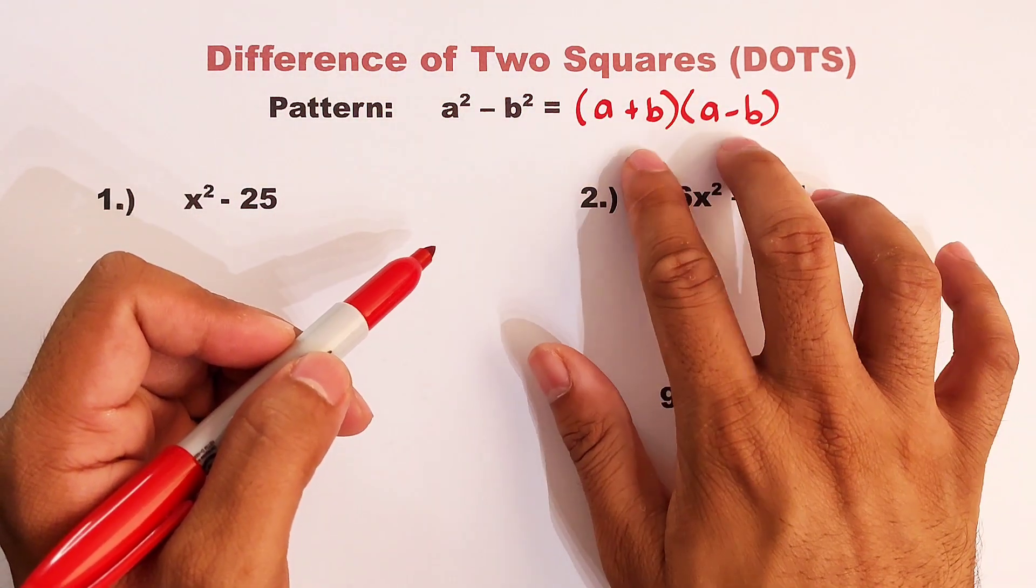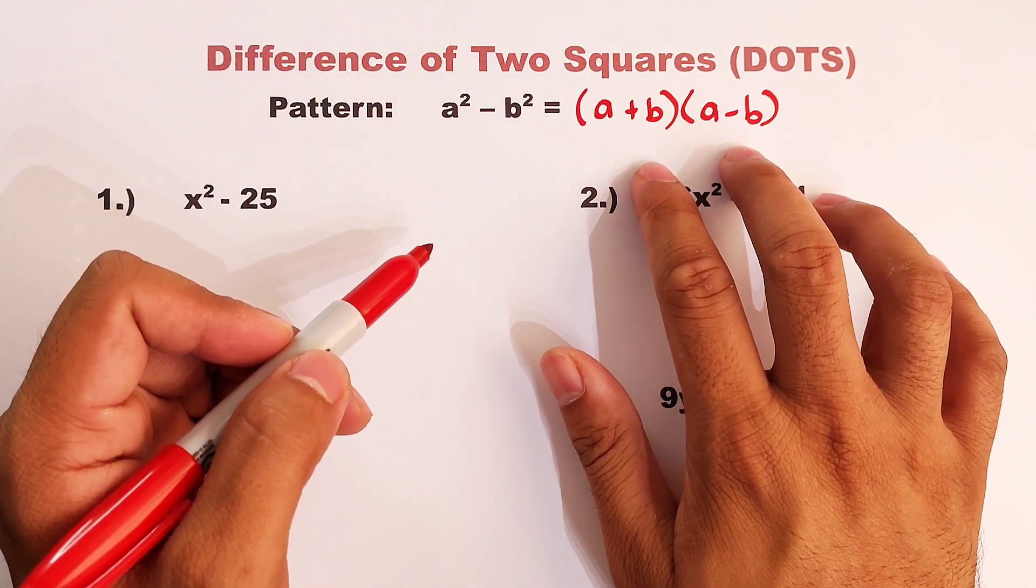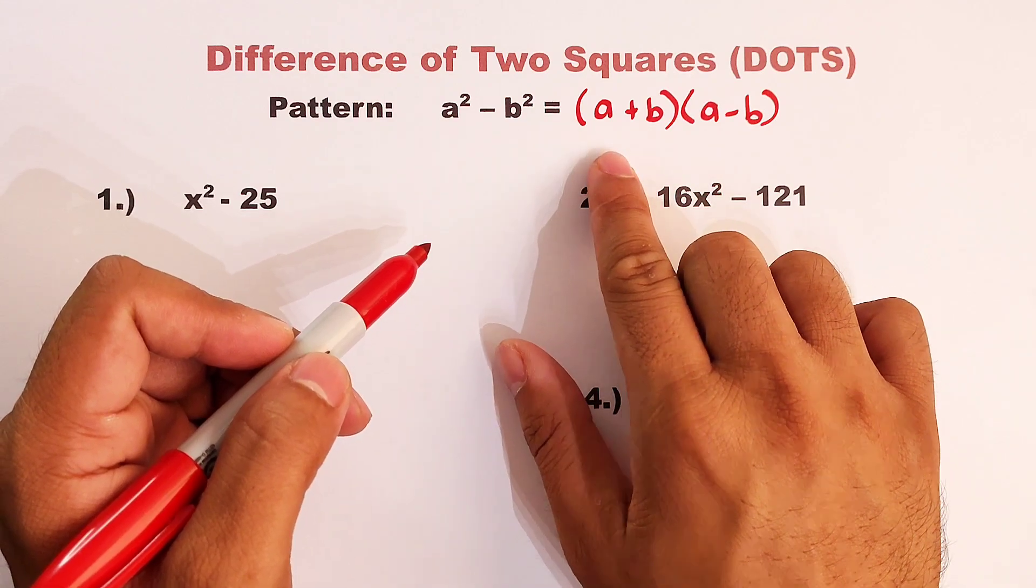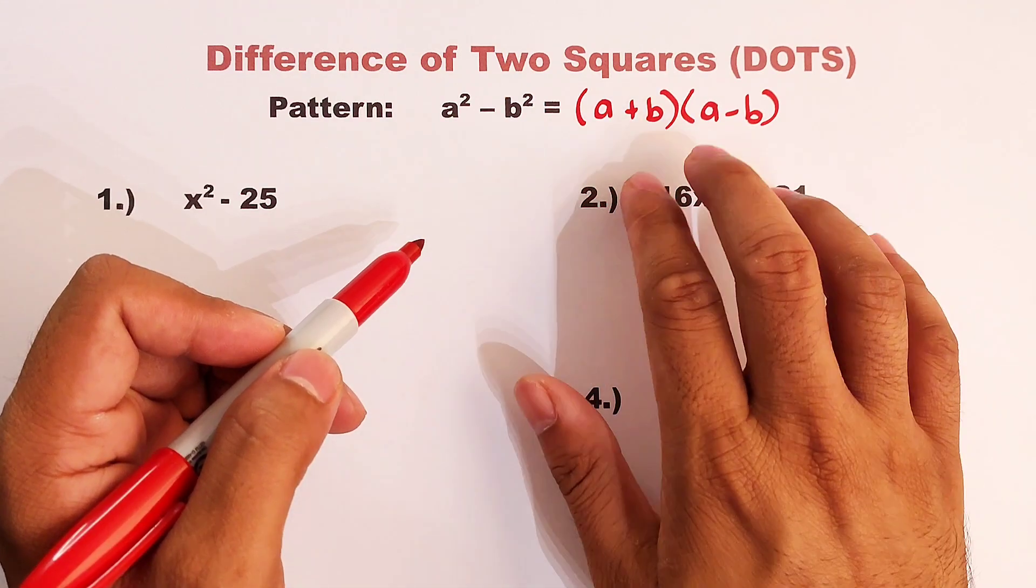Take note that these two factors are interchangeable. It can be a minus b times a plus b. So how do we get this pattern?